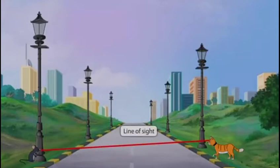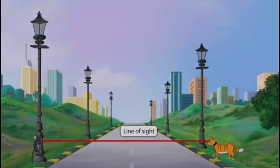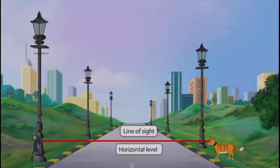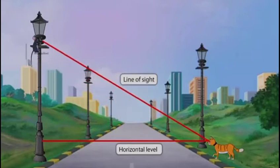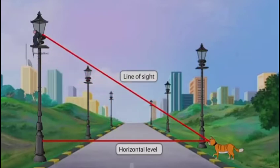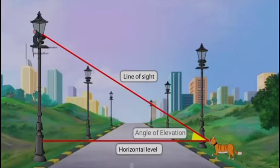Timmy wants to escape from Jimmy, so he climbs up the lamppost. Now Jimmy's line of sight is parallel to the ground level — this is called the horizontal level. Jimmy advances toward Timmy, who senses danger and climbs higher until he reaches the top. Now Jimmy looks up toward Timmy. The angle made by the line of sight with the horizontal level, when the object viewed is above the horizontal level, is called the angle of elevation.